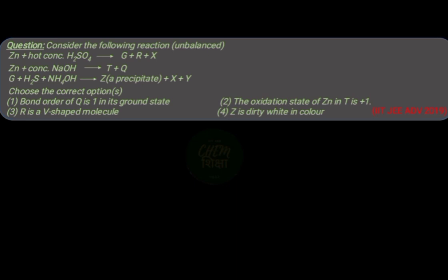Let us start with the first equation. When zinc reacts with hot and concentrated sulfuric acid, the products formed are zinc sulfate, sulfur dioxide, and water. For balancing the reaction, add 2 before H2SO4 and H2O.